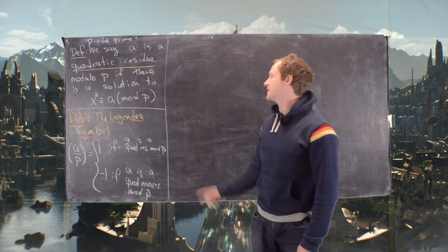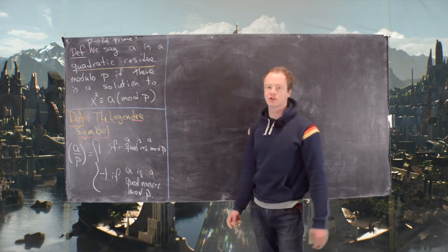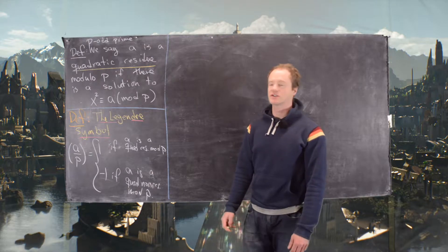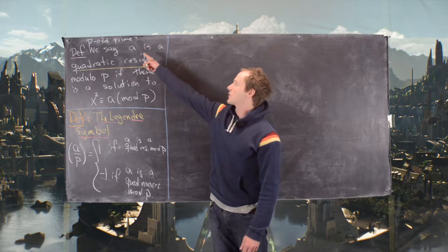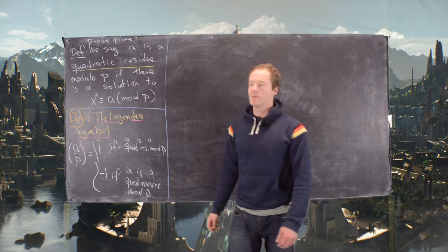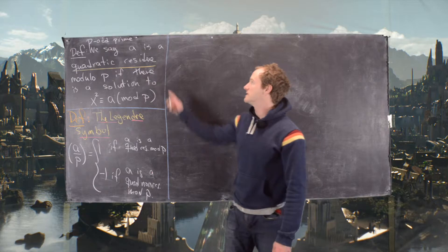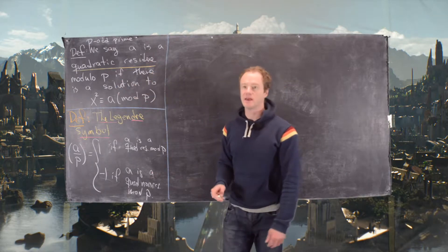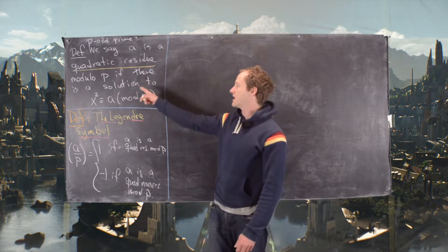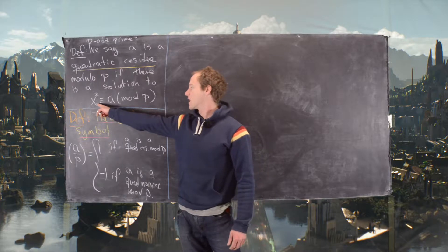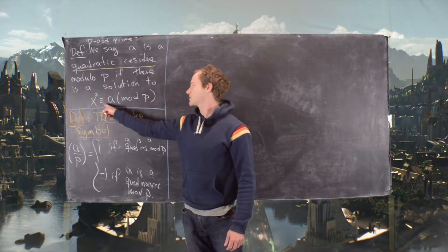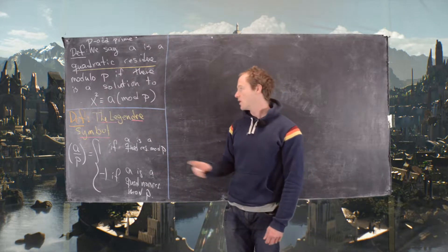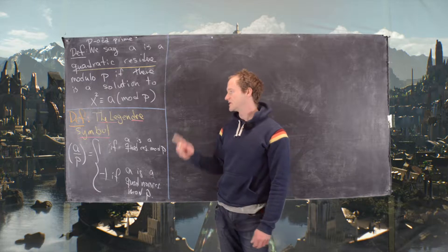In a previous video we looked at the notion of a quadratic residue. For an odd prime p, we say that a is a quadratic residue modulo p if there is a solution to the congruence x² ≡ a (mod p). In this video we want to introduce the Legendre symbol.